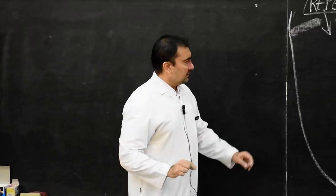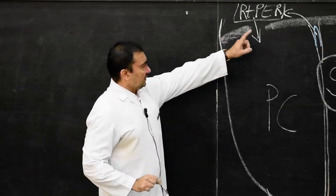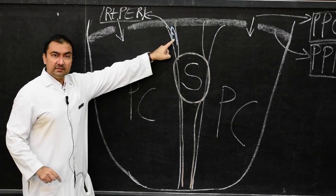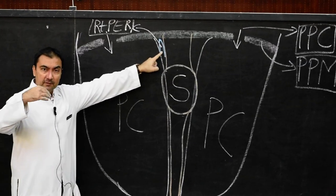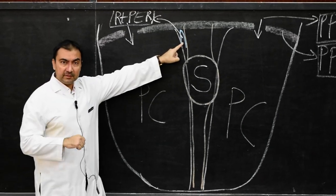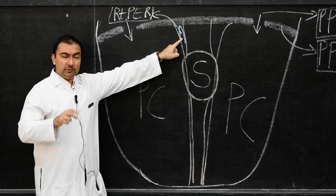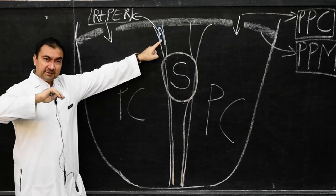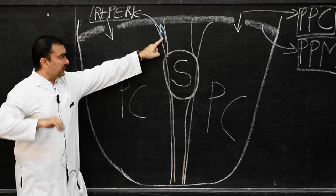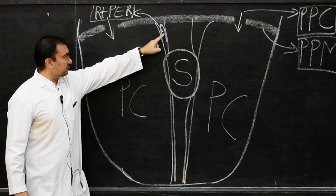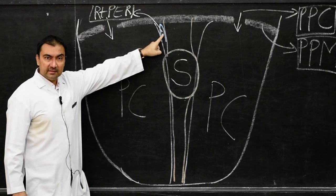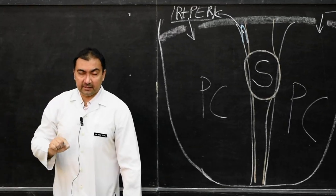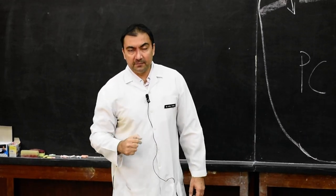The right pneumoenteric recess, infradiaphragmatic part, is overlapped ventrally by the caudate lobe of the liver. Therefore, because of the presence of the caudate lobe of the liver, just dorsal to it, there will be the infradiaphragmatic part of the right pneumoenteric recess. And therefore, it will form the upper recess of the lesser sac, or upper recess of the omental bursa.